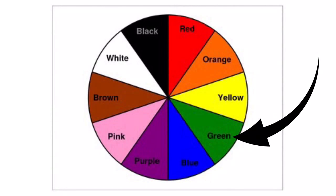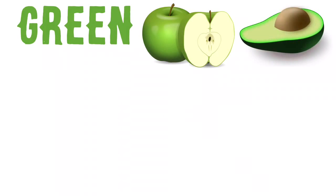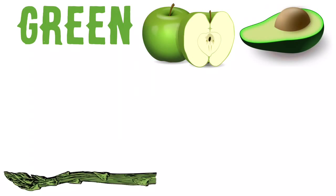This color is green. Which fruits and vegetables are green? Green. Apple, avocado, asparagus.